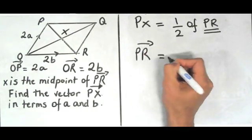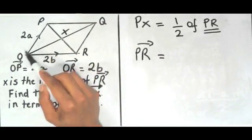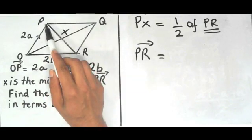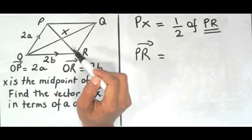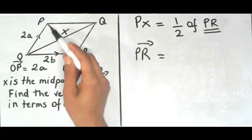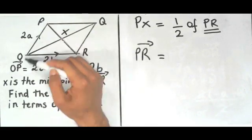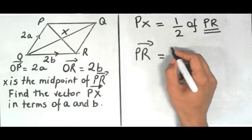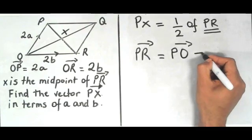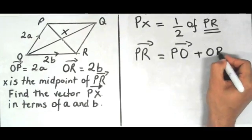PR can be written as P to O and O to R. So if I'm going from P to R I can take the vector P to O and O to R or I can take the vector P to Q and Q to R. I'm going to go ahead and choose that one because I already have the vectors and it's just easier. So I'm going to go from P to O and then I'm going to go from O to R.